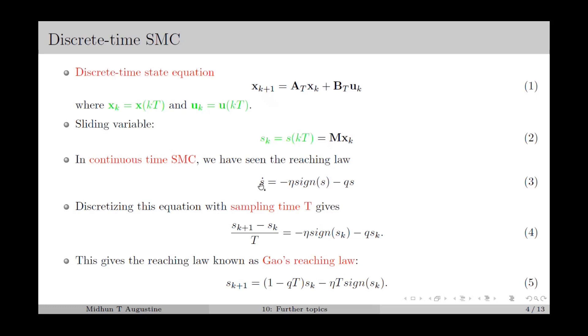Here ṡ can be approximated as Δs/Δt. If we consider Δt as the sampling period T, then Δs will be s_{k+1} - s_k. So we can approximate ṡ as (s_{k+1} - s_k)/T, giving -η·sgn(s_k) - q·s_k on the right-hand side.